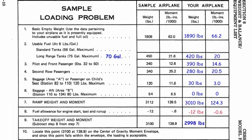Taking 3,010 pounds minus 12 pounds gives us a takeoff weight of 2,998 pounds. For the moment: 124.3 minus 0.6 gives us 123.7. So our takeoff weight is 2,998 pounds and our moment is 123.7.